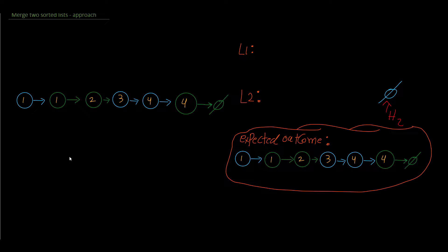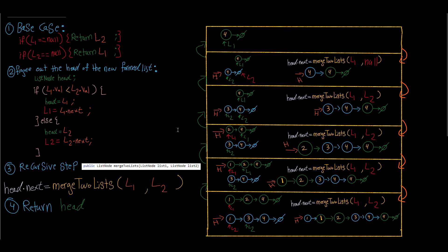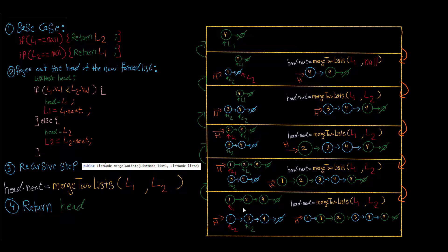Now let's see how this is implemented using recursion and walk through exactly how every step happens in the call stack. When we compare the two heads and pick the smaller one, we advance that head to the next node — so one of the lists is getting smaller each time. We are creating sub-problems, and we keep doing that until one of the heads reaches null.